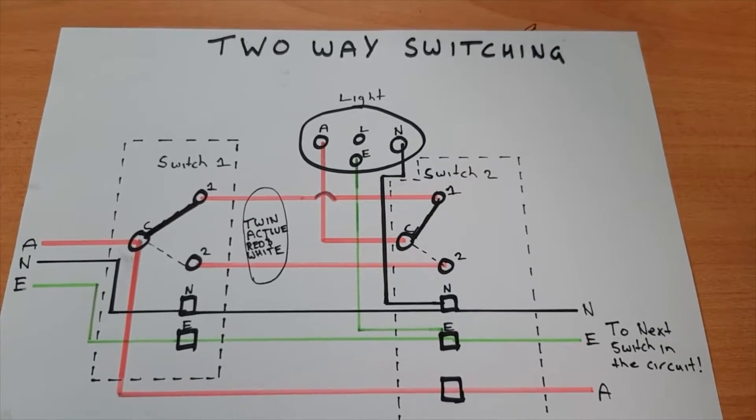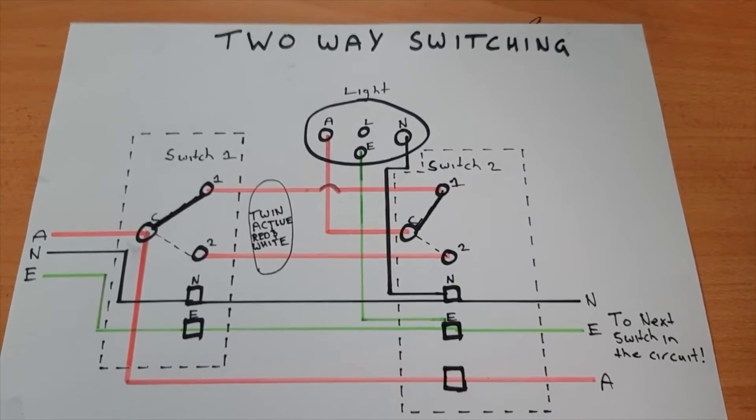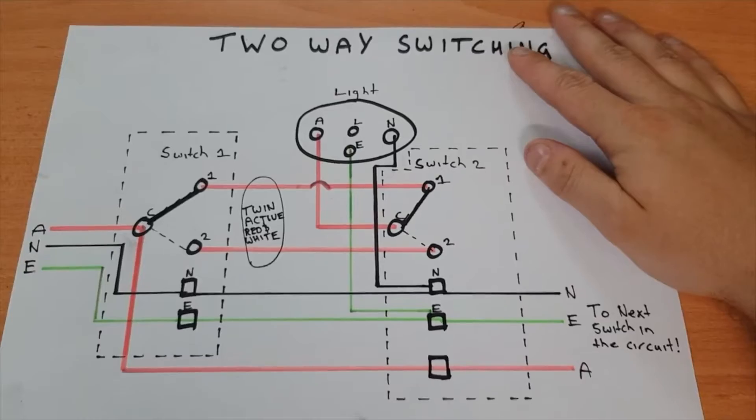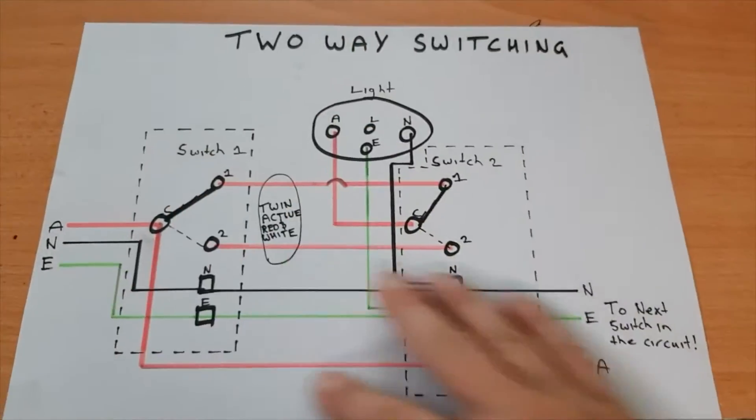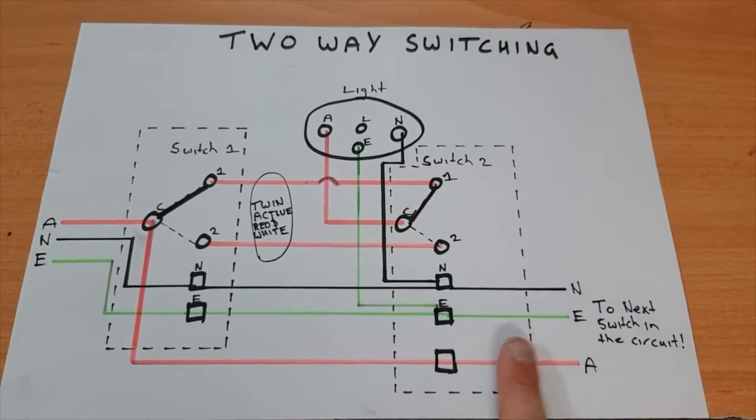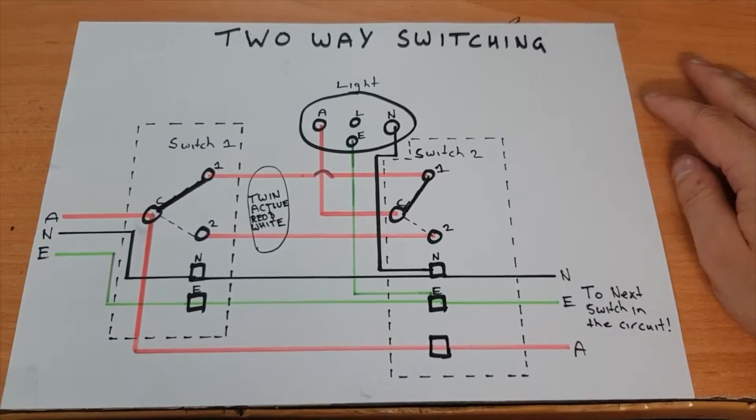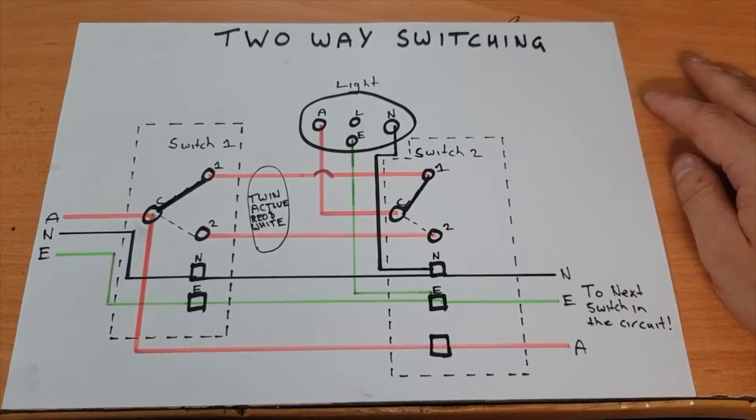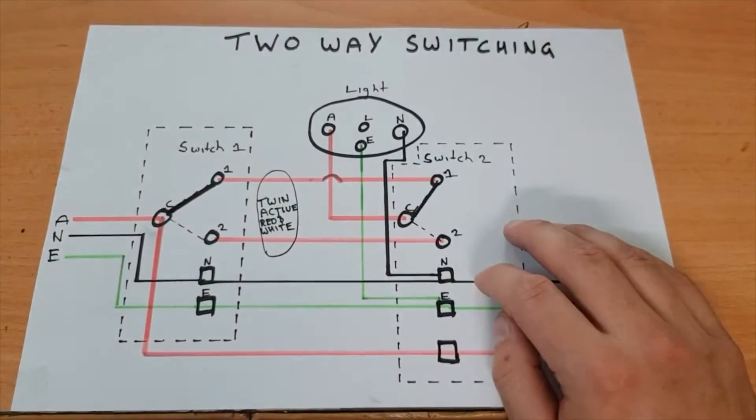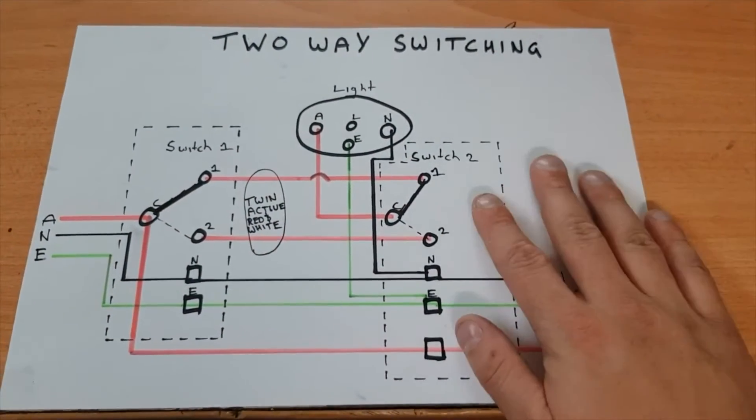Hey guys, all electrical here. This is just a quick video to explain two-way switching and how it works. This example here is looped at the switch. If you have no idea what that is, please refer to my other video that differentiates the difference between looped at the light and looped at the switch. So watch that first before watching this.